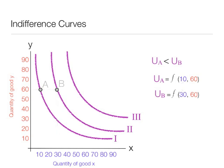I will continue on and add point C. At that point there is 50x and 60y, so the utility at point C is a function of consuming 50x and 60y.